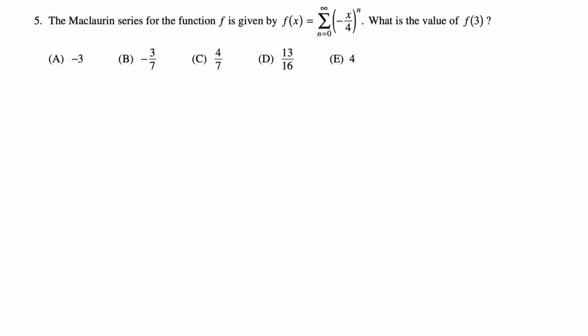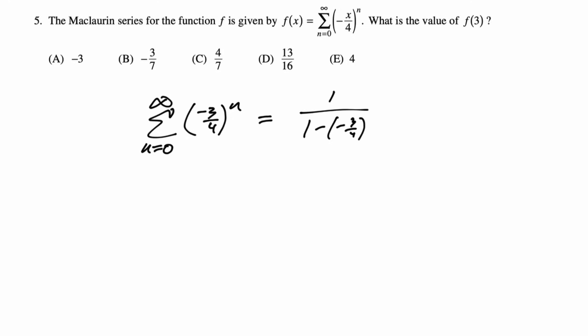Here the Maclaurin series is given by the sum from 0 to infinity of (−x/4)^n. What's the value of f(3)? Just plug in 3: sum from 0 to infinity of (−3/4)^n. That's geometric — first term is 1, ratio is −3/4, so it's 1 over (1 − (−3/4)) = 1 over (7/4) = 4/7. Answer is C.